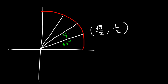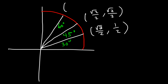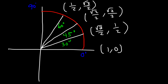At a 45 degree angle, it's square root of 2 over 2 for both x and y — those values are the same. At 60 degrees, the x value is 1 half and the y value is root 3 over 2. As you can see, some of these values repeat. At 0 degrees it's (1, 0), at 90 it's (0, 1), at 180 x is negative 1 and y is 0, and at 270 x is 0 and y is negative 1.